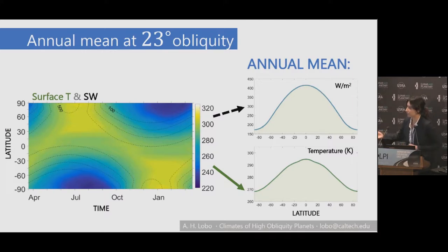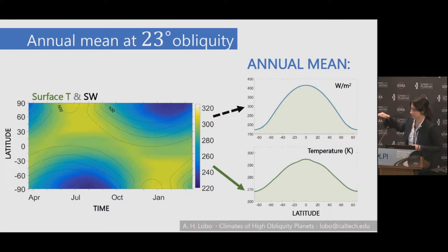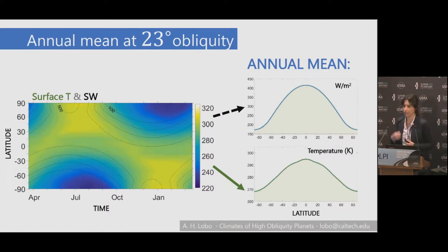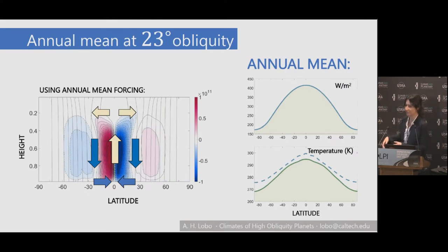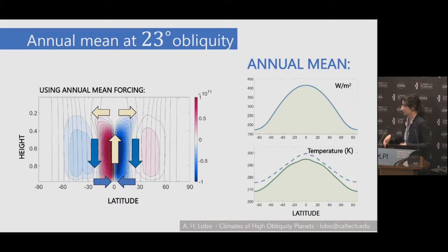For the 23-degree case, on the left you have seasonal variability with latitude over time: surface temperatures shown in color and insolation as a dashed line. On the right you have annual mean insolation and annual mean temperature. If you force the model with just the annual mean without varying seasonality, you obtain surface temperatures that look about the same. You get the traditional circulation: the ITCZ near the equator and descending branches at the poleward edge of the Hadley cell.